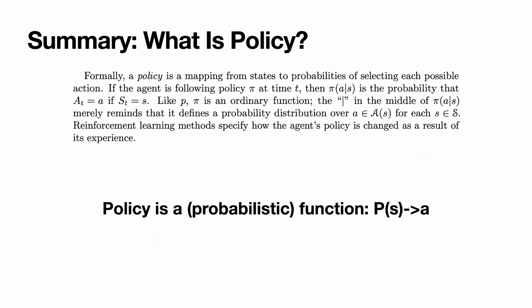If the agent is following policy π at time t, then π(a|s) is the probability that at this time step t, the chosen action will be a and the chosen state will be s.